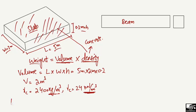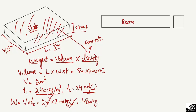Weight equals volume multiplied by the density of the material. The volume is 2 cubic meters, and the density of concrete is 2400 kilograms per cubic meter. The cubic meter units cancel out, and multiplying 2 by 2400 gives us a weight of 4800 kilograms.